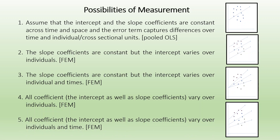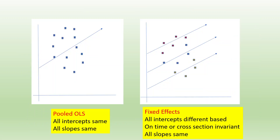All are fixed effects models. In pooled OLS, all intercepts and slopes are same. In fixed effects, all intercepts are different based on time or cross-section. In my previous video, I discussed about how to include the cross-section effect in the fixed effect model. In this video, I am going to discuss about how to include the time effect in fixed effect models.